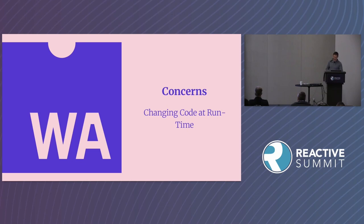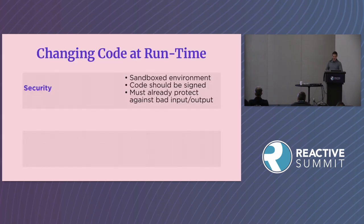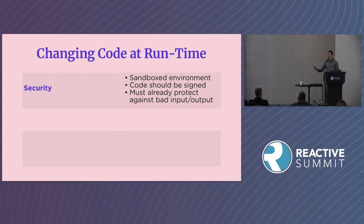Let's address some concerns with this approach. Many people object to changing code at runtime. The first objection is security. But WebAssembly offers a very restrictive sandbox, so it's much less dangerous than changing arbitrary code. The code should also be signed. The firmware already needs to protect against bad input and bad output, because often the firmware is developed by a large team — the team iterating on the price function is different from the team doing actuation. You already need to protect against bad input and bad output.